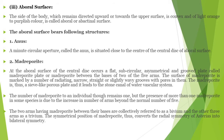The surface of the madreporite is marked by a number of radiating, narrow, straight, slightly wavy grooves called madreporite grooves. The madreporite is a sieve-like porous plate that leads to the stone canal of the water vascular system. The number of madreporites in an individual normally remains one, but some species with more than five arms may have more than one madreporite. The two arms having a madreporite between their bases are collectively referred to as biradius, and the other arms are called triradius.